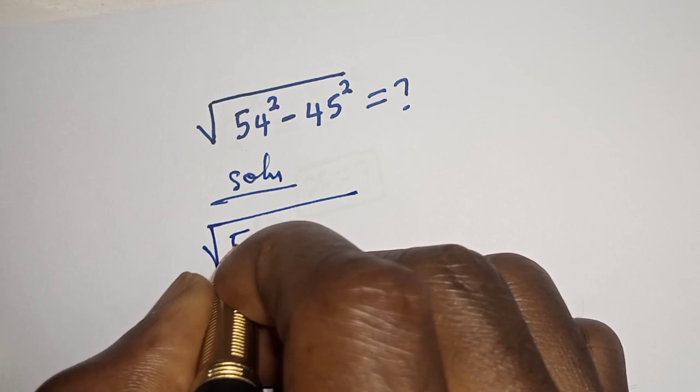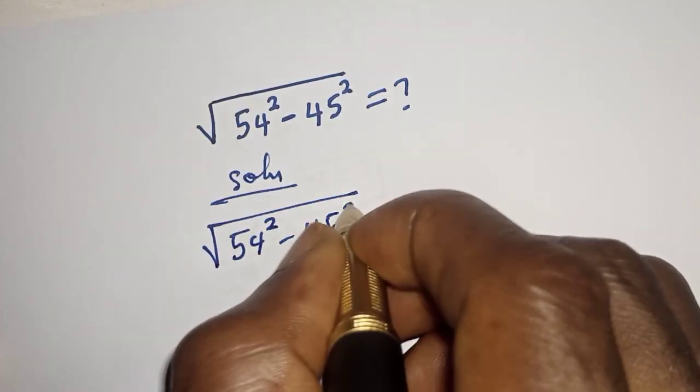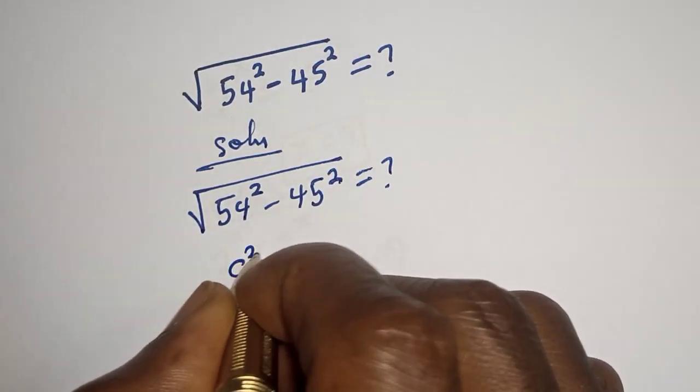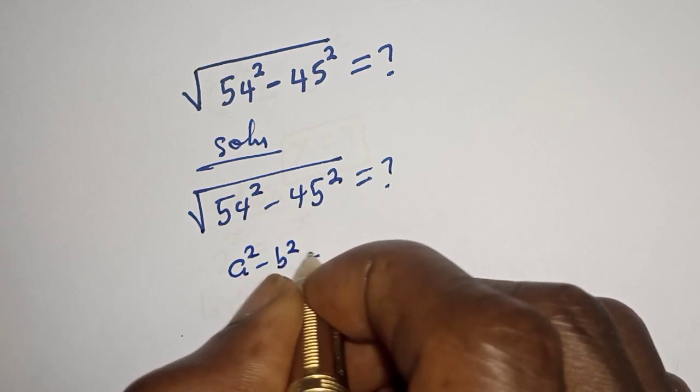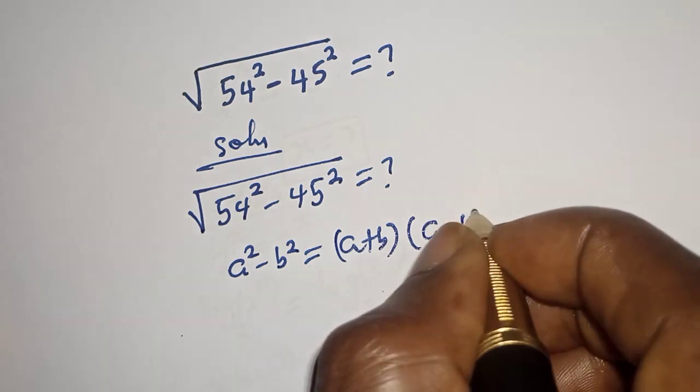Square root of 54 squared minus 45 squared. Then, take note of this: a squared minus b squared is equal to a plus b multiplied by a minus b,